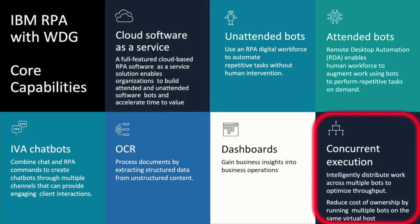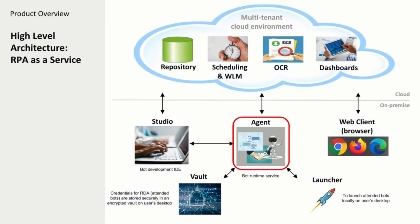Starting by reminding ourselves of the base capabilities we offer in IBM RPA — one of the most exciting and interesting capabilities is really the concurrent execution model that we support, which can deliver significant savings on the total cost of ownership of your RPA environment. When talking about bot execution, we also need to acknowledge the underlying logical architecture: the runtime environment we need to install on every computer or virtual machine is the agent service, which acts as the bot runtime environment.